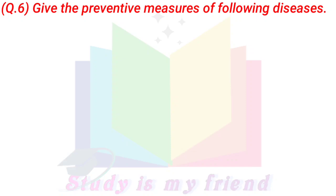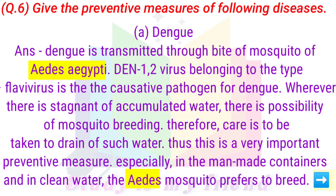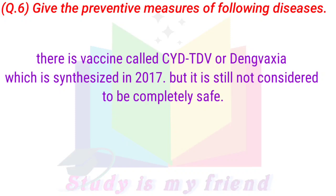Question 6: Give the preventive measures of the following diseases. A. Dengue. Answer: Dengue is transmitted through the bite of the mosquito Aedes aegypti. The DEN 1-2 virus belonging to the flavivirus type is the causative pathogen for dengue. Wherever there is stagnant or accumulated water, there is a possibility of mosquito breeding. Therefore, care is to be taken to drain such water. This is a very important preventive measure, especially in man-made containers with clean water where Aedes mosquito prefers to breed. There is a vaccine called CYD-TDV or Dengue Vaxia, synthesized in 2017, but it is still not considered completely safe.